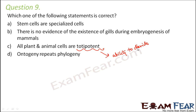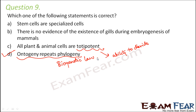Option D: ontogeny repeats phylogeny. Yes, that is true — this is the biogenetic law. This is the right option. The biogenetic law tells us that during the development of an individual organism from the earliest stage to maturity, the organism passes through its ancestral phases, or in other words, it passes through its evolutionary history.